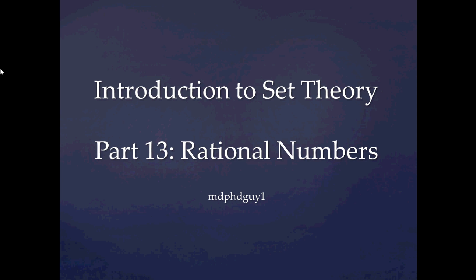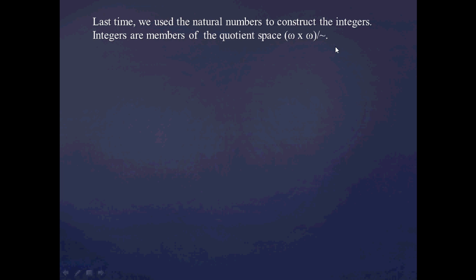In the last video, we used our knowledge of the natural numbers to set up the integers, and we're going to continue on in this video and use our knowledge of the integers to set up the rational numbers. As a quick review of what we did last time, we considered the Cartesian product omega times omega, and we set up an appropriate equivalence relation upon omega times omega, which partitioned it. So integers are equivalence classes — members of the quotient space omega times omega modulo tilde.